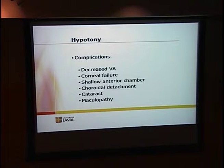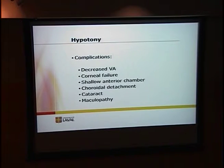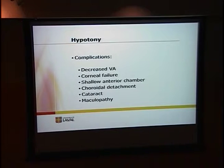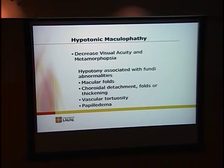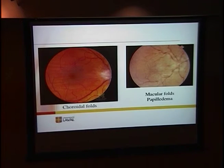As complications of hypotony, depending on whether it's recent or more chronic, we can have almost no complaints initially — no decreased vision, a pressure of five with a nice bleb and no leak — so we just observe. But when it becomes more chronic, vision can decrease. We can have corneal failure, a shallow anterior chamber, choroidal detachment, cataract, and maculopathy. When the maculopathy is present, vision is really decreased with metamorphopsia, associated with fundus anomalies like macular folds, choroidal detachment folds, thickening, vascular tortuosity, and papilledema.